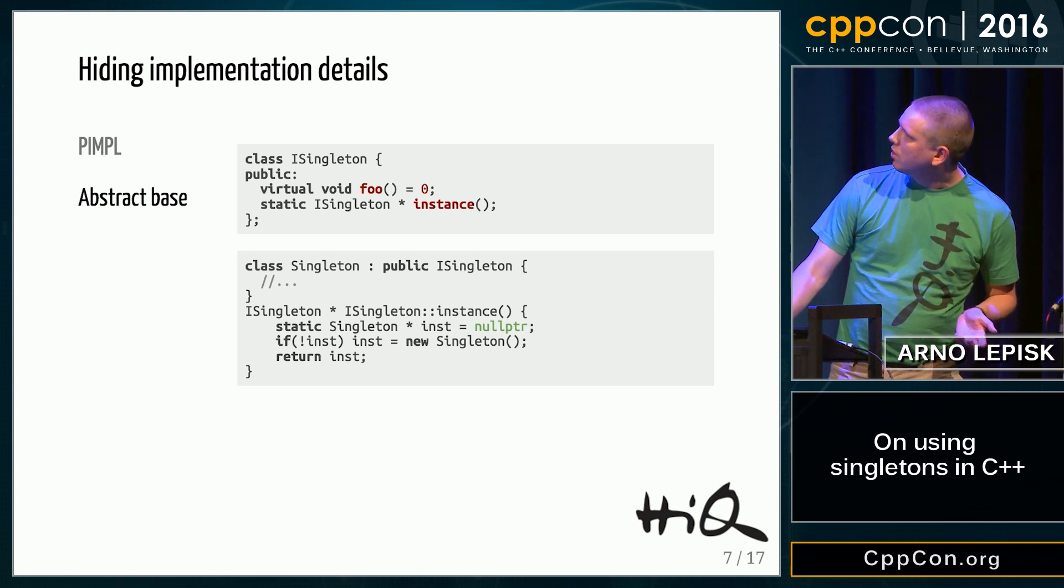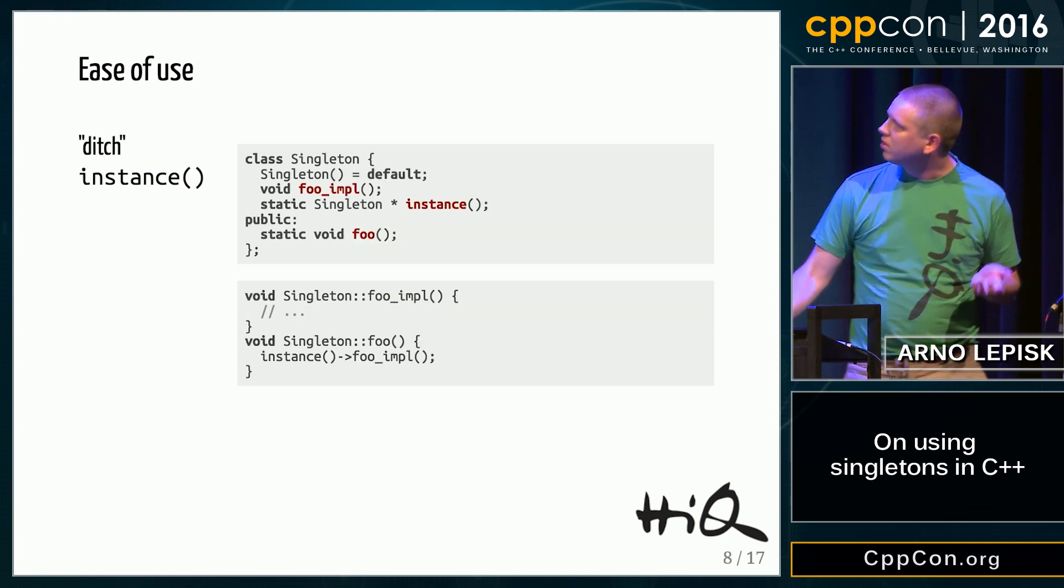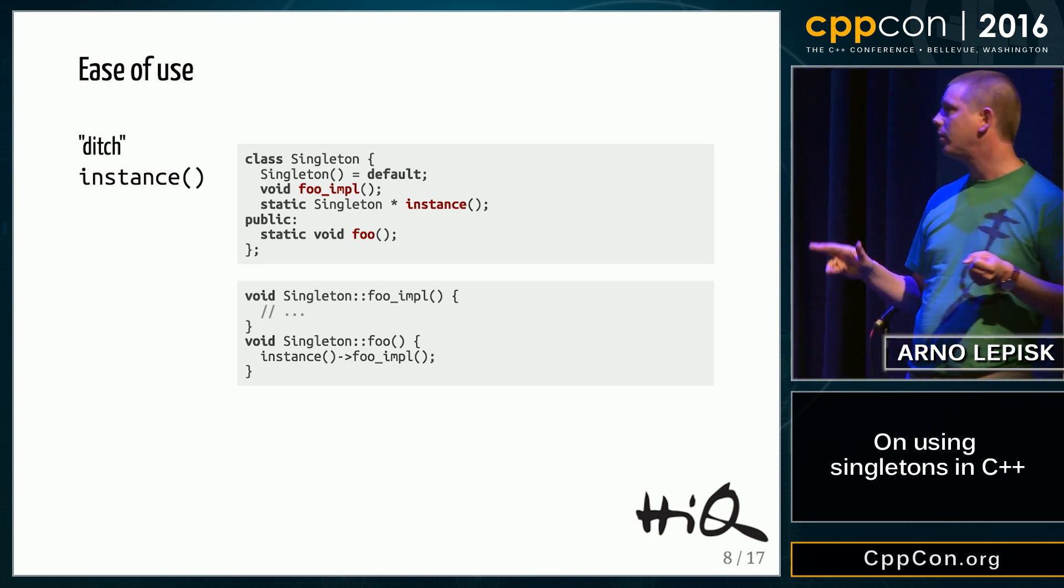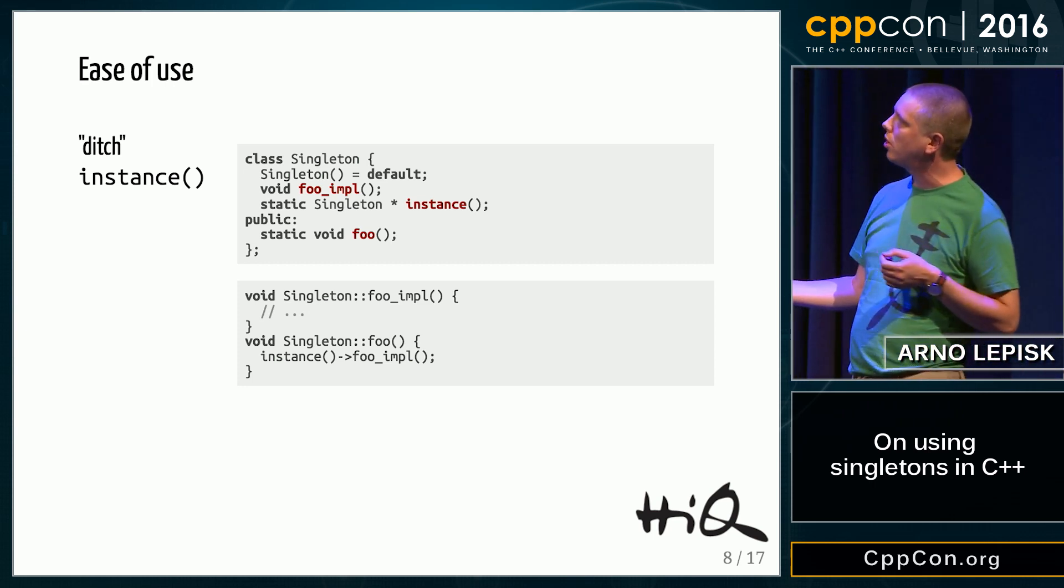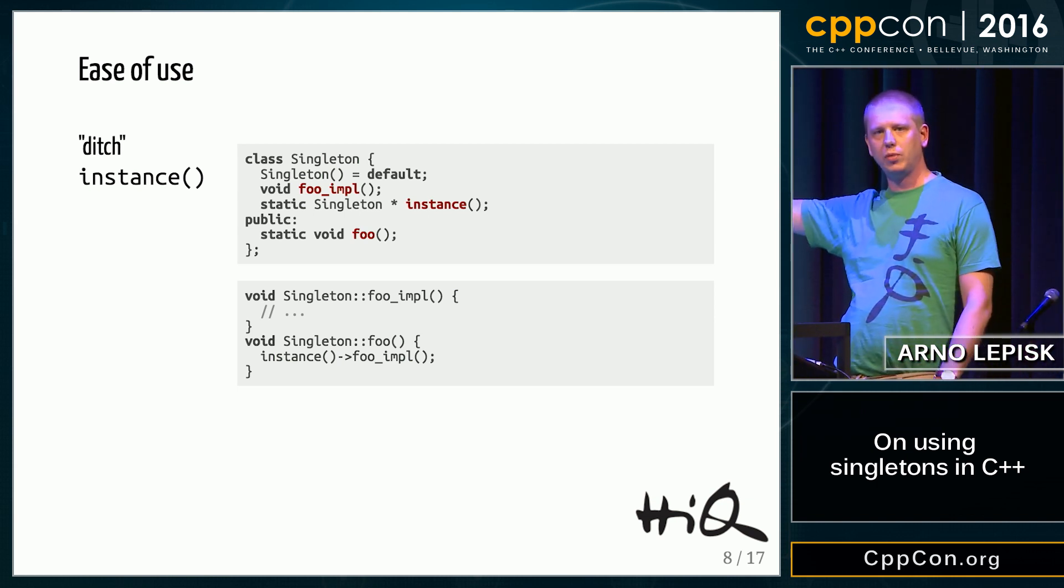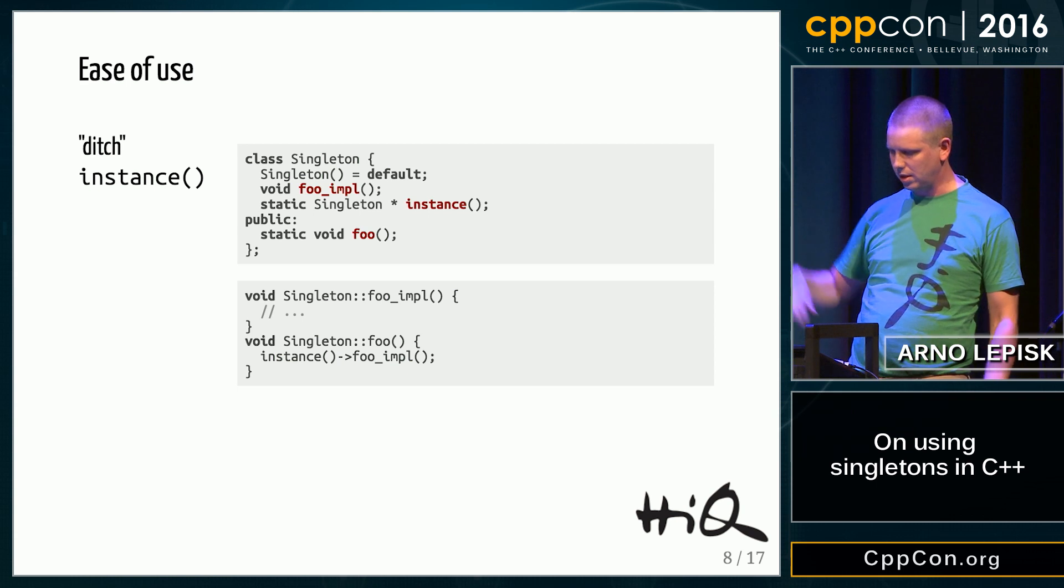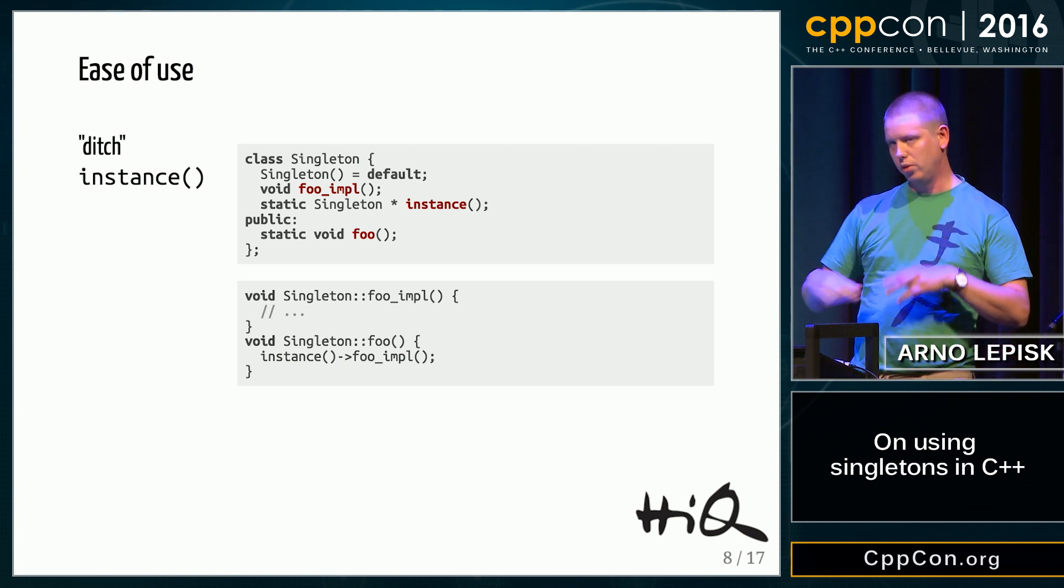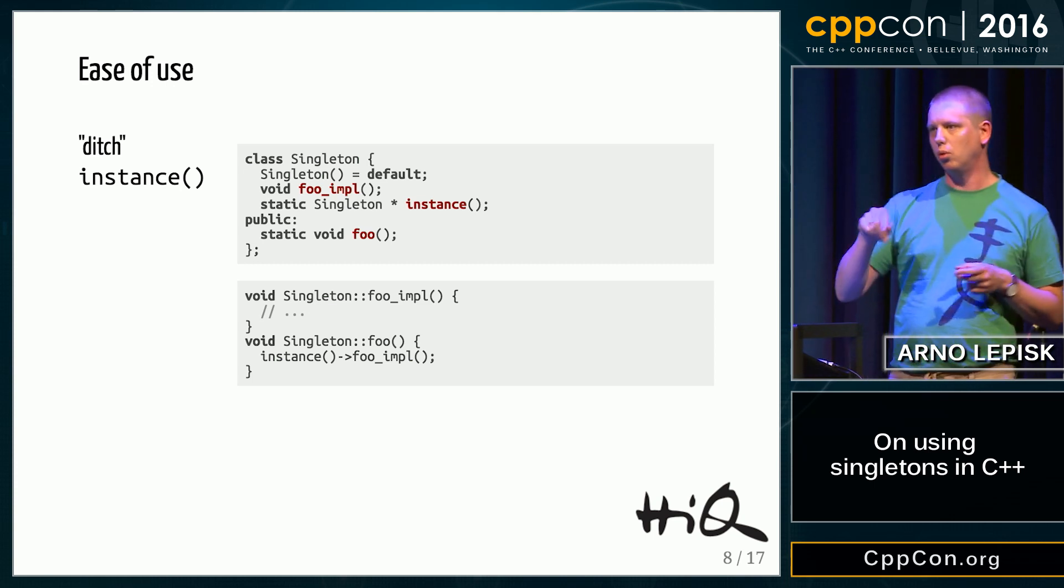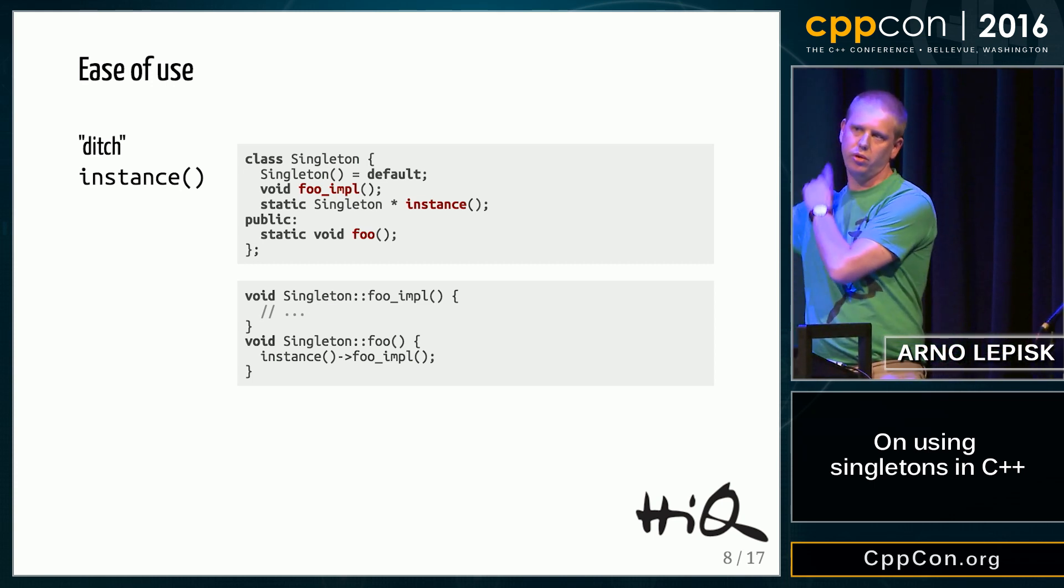But if we want to have a singleton that's easy to use, we can ditch in a way or hide our instance method and expose all our interface with static methods, and so we can call it with singleton::foo instead of singleton::instance->foo.